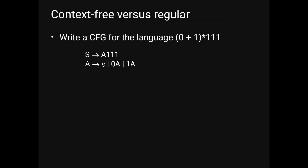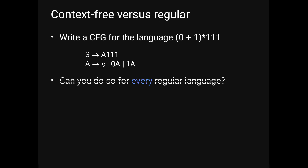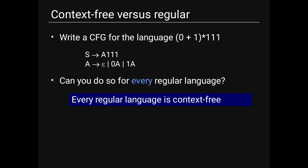Example: write a CFG for the language (0+1)*111. We can write S → A111, A → ε | 0A | 1A. Yes, every regular language is a context-free language.